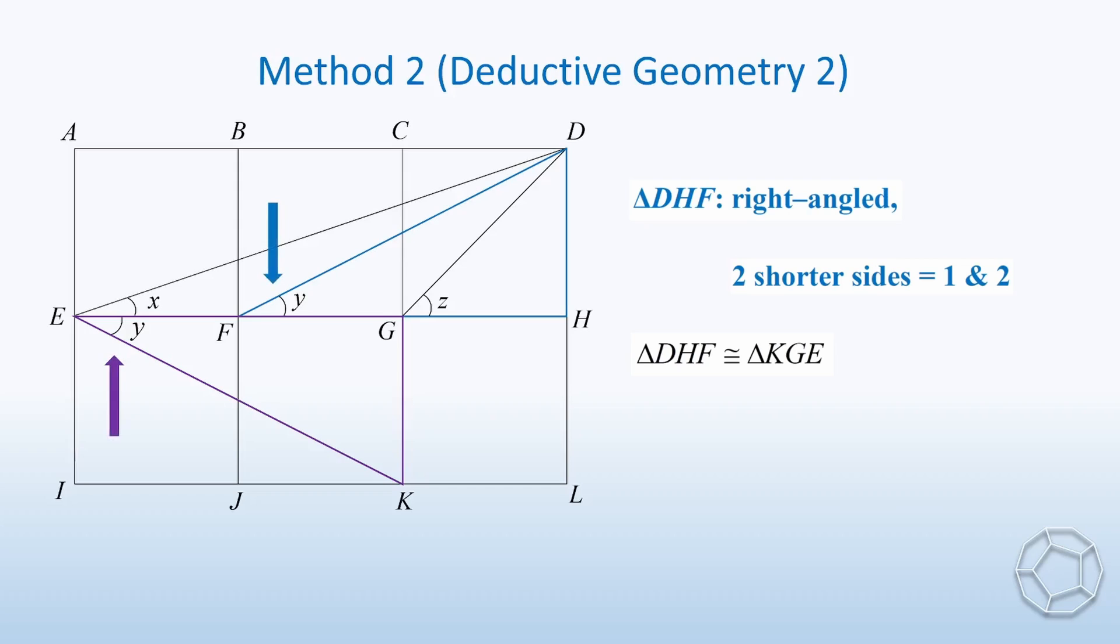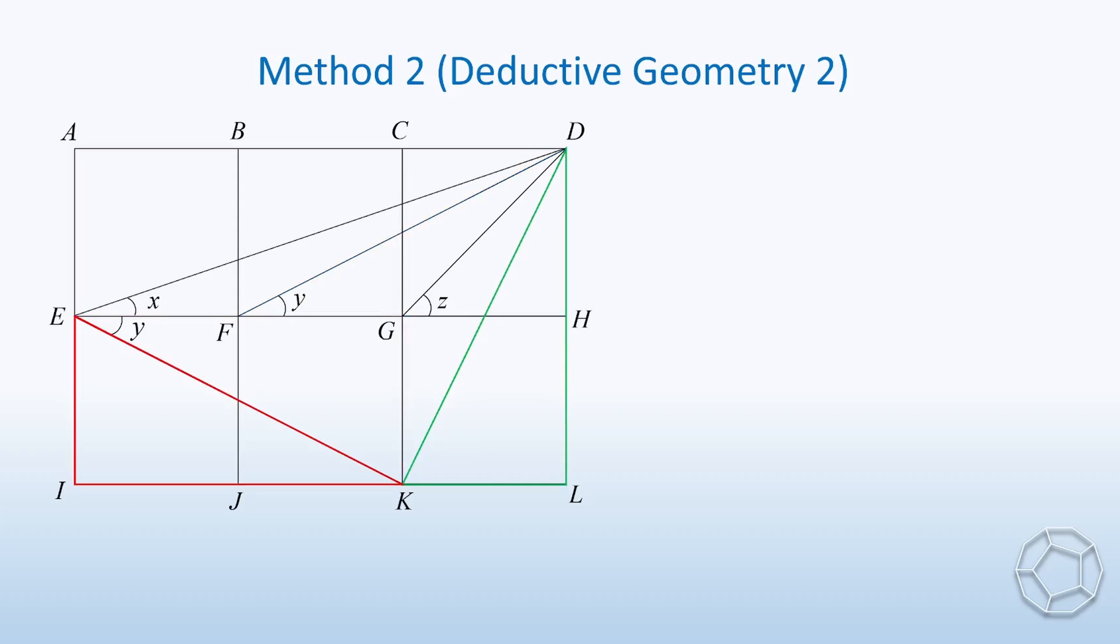So, these two angles are both equal to y, because of corresponding angles congruent triangles. Why do we have to consider this? You see, the two angles x and y are separated in the original setting. But now, they are put together. The question becomes easier. Indeed, this purple triangle is not the only one we want to talk about. Let's construct the side DK as well. Then, this red triangle and this green triangle are also right-angled with sides 1 and 2. That means triangle EIK is congruent to triangle KLD. Therefore, we have a couple of important results from congruent triangles. The two hypotenuses EK and KD are corresponding sides, so they are equal. Also, these two angles are corresponding angles. Let's call them alpha.